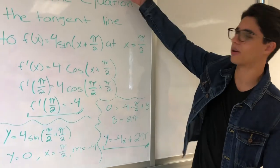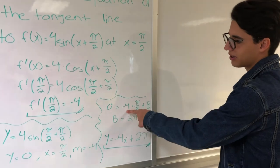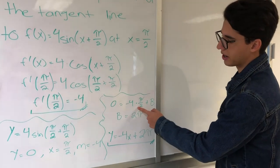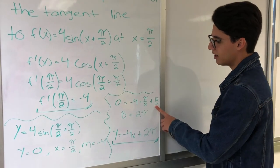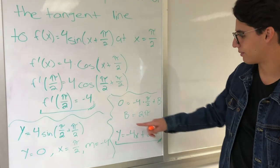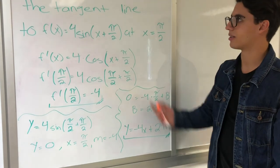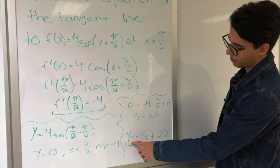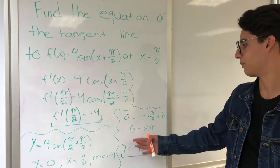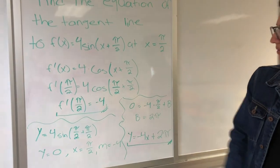The final step: we use the equation y equals mx plus b. Putting in y equals 0, m equals minus 4, and x equals π/2, we get 0 equals minus 4 times (π/2) plus b. We solve for b and move those terms to the other side, giving b equals 2π. At the end, we define our tangent line as y equals minus 4x plus 2π, where minus 4 is the slope m and 2π is your b. That is the final answer.